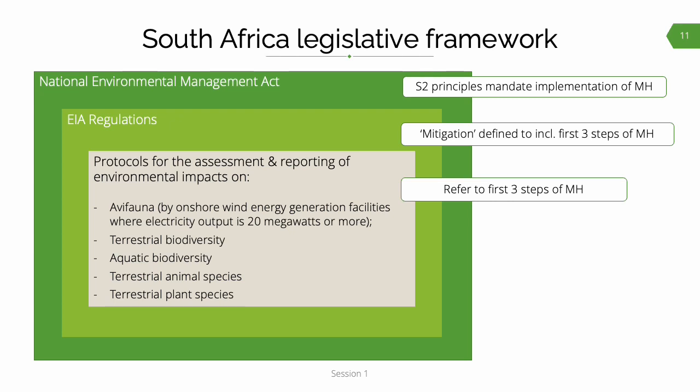The NEMA principles reflect the definition of the mitigation hierarchy. The EIA regulations also require application of the mitigation hierarchy, and this requirement is reflected in the species protocols. The NEMA principles are relevant to all organs of state — covering not only provincial environmental and planning departments chiefly responsible for reviewing EIAs, but also the National Department of the Environment, the DMRE, the Department of Water Affairs, the South African Heritage Resource Agency, and any other authority with environmentally related decision powers.